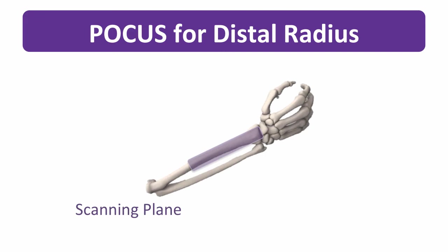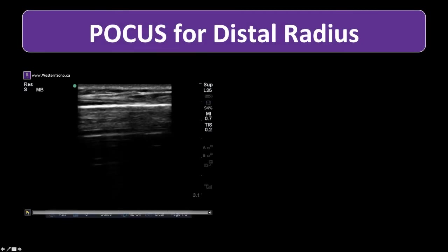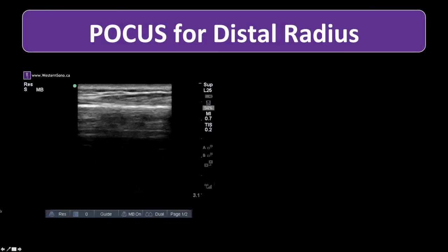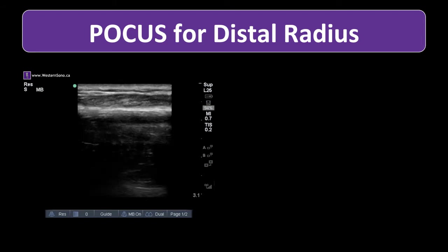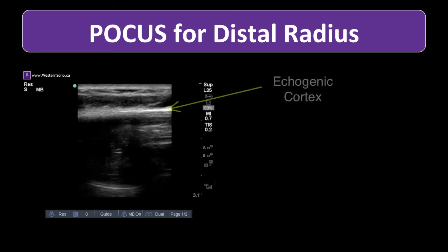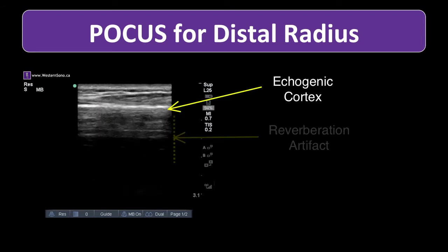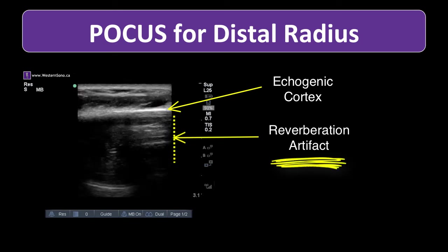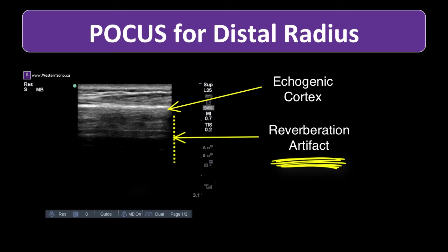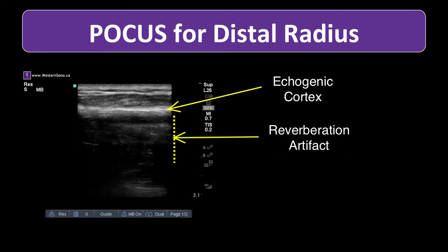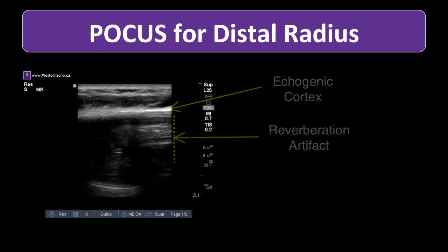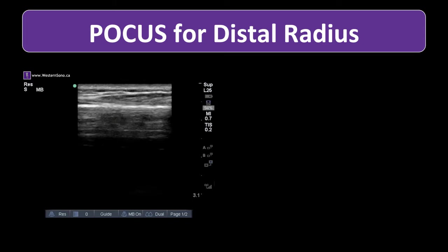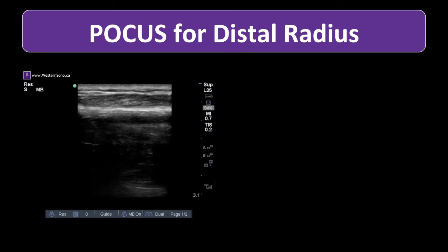Let's take a look at a scan of a distal radius fracture and the corresponding x-ray. This is what intact bone looks like. Here we see the bright echogenic line of the cortex, and a bunch of reverberation artifact in the far field. None of that represents real anatomy, but that's okay — we are focusing on the continuity of the echogenic cortex of the bone. You can see that the line is smooth and there are no disruptions. This is normal.